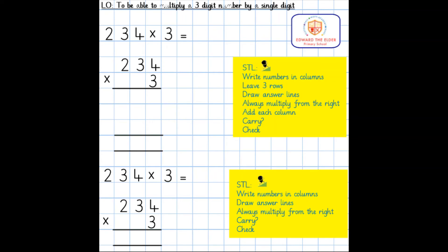We teach four methods of multiplication in Year 4, moving on from the grid method in Year 3 to the expanded and compact column methods. The learning objective is to be able to multiply a three-digit number by a single digit. Our number sentence says 234 multiplied by 3, and we're going to use our steps to learning to help us solve this calculation.